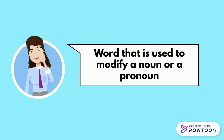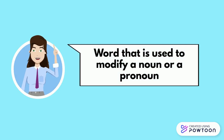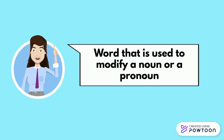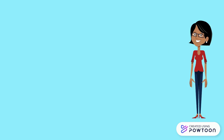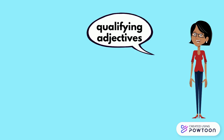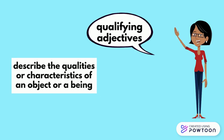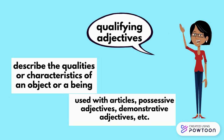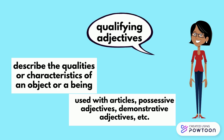An adjective is a type of word that is used to modify a noun or a pronoun. In this video I am going to focus specifically on qualifying adjectives — adjectives that describe the qualities or characteristics of an object or a being — that are often used with articles, possessive adjectives, demonstrative adjectives and so on.